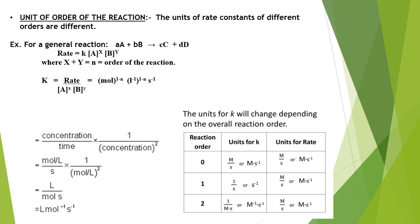Now, the unit of rate constant. The unit of rate constant is not constant — it may change according to the order of the reaction. Order of the reaction can be of various types: it may be zero order, first order, second order, third order, or even fractional. So there are different rate constants for different orders of reactions.